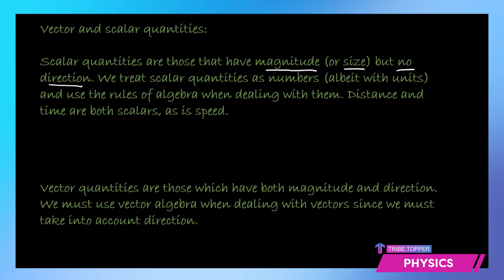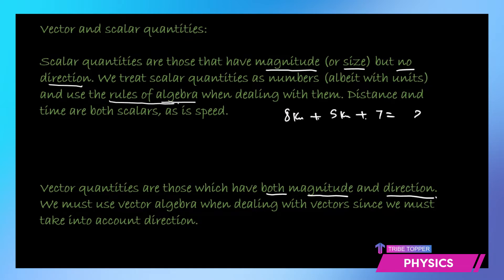If we talk of vector quantities, what's the difference? These are quantities that have both magnitude and direction. So we can't use ordinary rules of algebra like we do for adding scalars. For example, total distance of 8 km plus 5 km plus 7 km gives 20 km. But in vector quantities, you cannot simply add or subtract using ordinary algebra — we have to apply the laws of vectors because we need to take into account the direction.